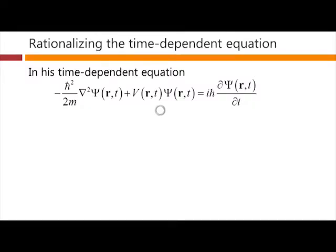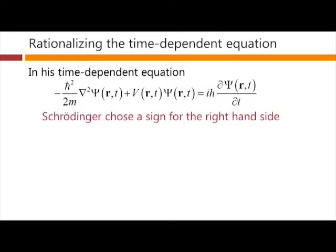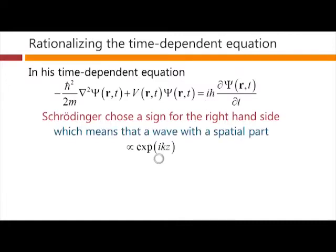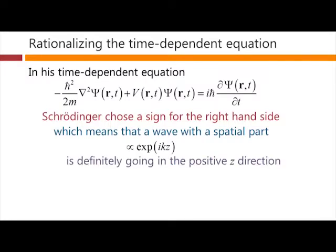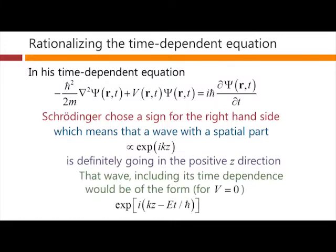Now, in his time-dependent equation, Schrödinger chose a sign for the right-hand side — he could have set it up with either sign, but he chose a plus sign on the right. That means that a wave with a spatial part of the form e to the plus ikz is quite definitely a wave going in the positive z direction. And that wave, including its time dependence, would be e to the i(kz minus Et/h-bar).